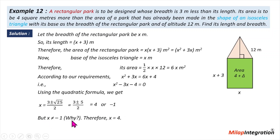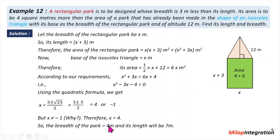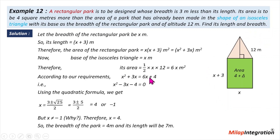Since x cannot be negative, x equals 4. Therefore the breadth of the park is 4 meters and the length is x plus 3 equals 7 meters. We used the area formula, the triangle formula, and formed the equation properly. Once the quadratic equation was set up, it was straightforward to solve.